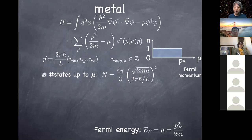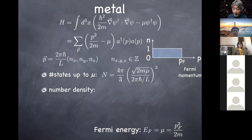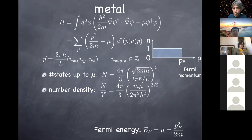Now let's estimate this. In a piece of metal, you have all the ions lined up — for example in the case of iron atoms.